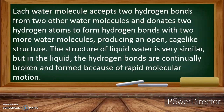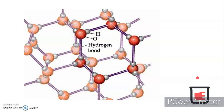Each water molecule accepts two hydrogen bonds from other water molecules and donates two hydrogen atoms to form hydrogen bonds with two more water molecules, producing an open cage-like structure. The structure of liquid water is very similar, but in the liquid the hydrogen bonds are continually broken and formed because of rapid molecular motion. Let's take a closer look at the structure.